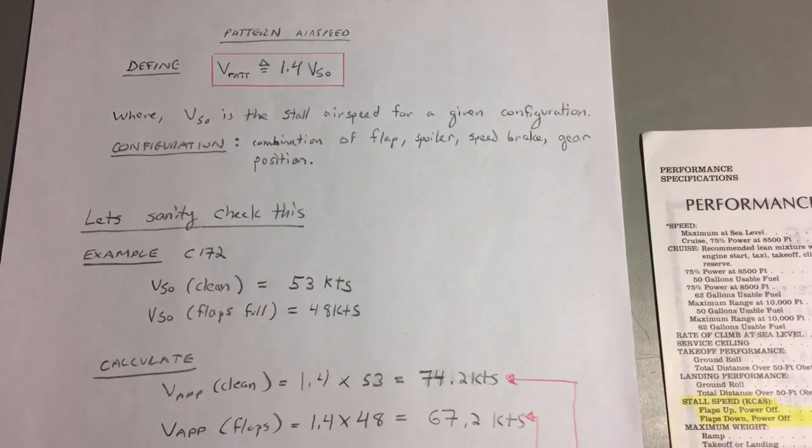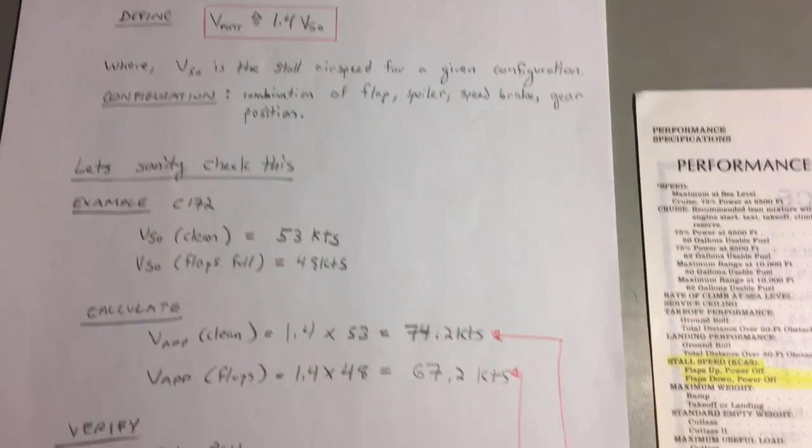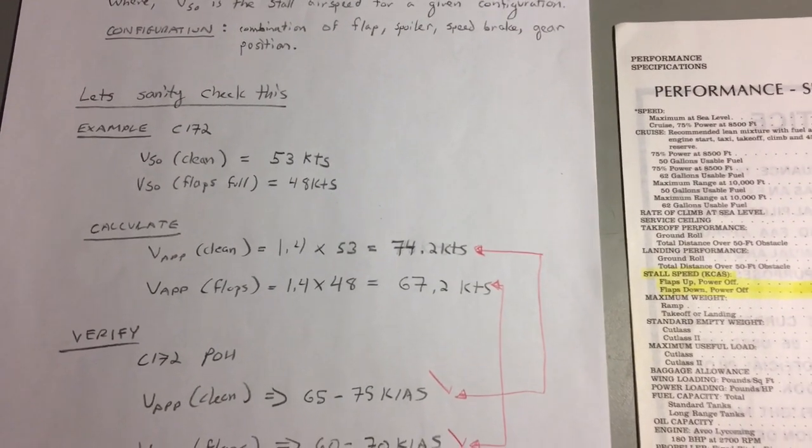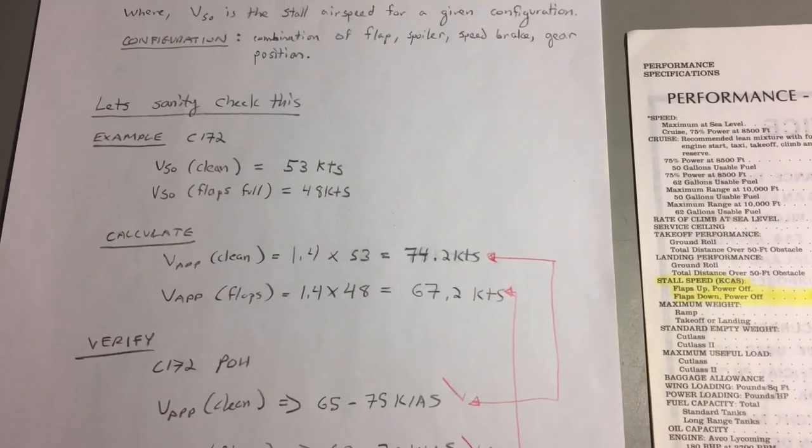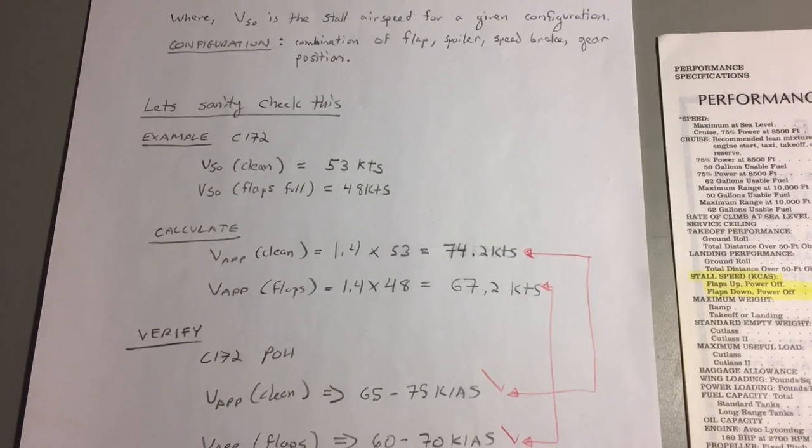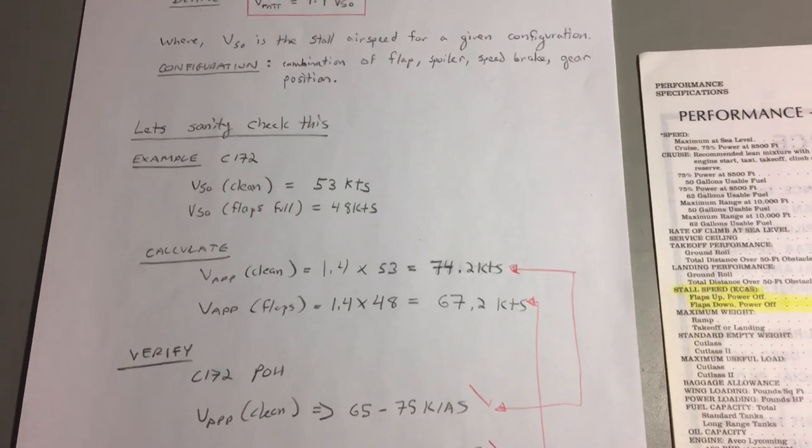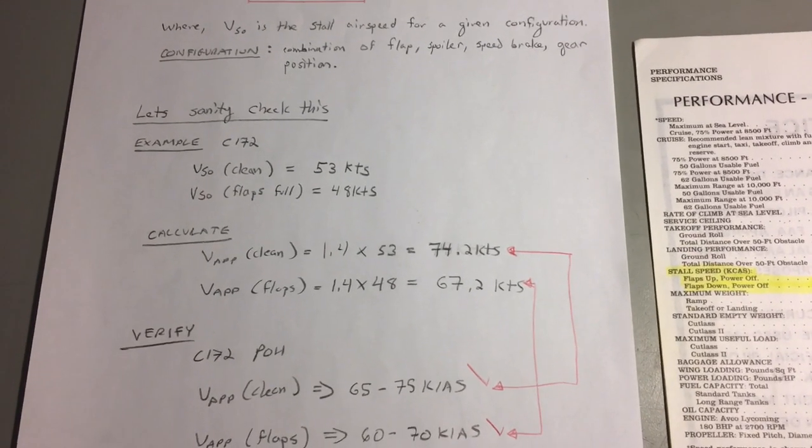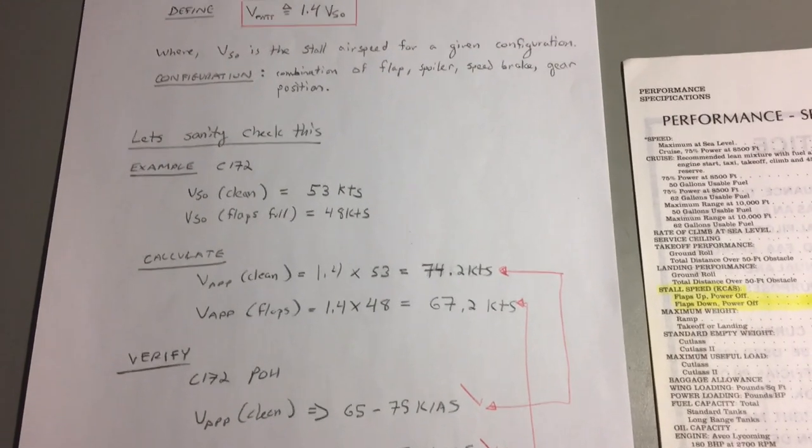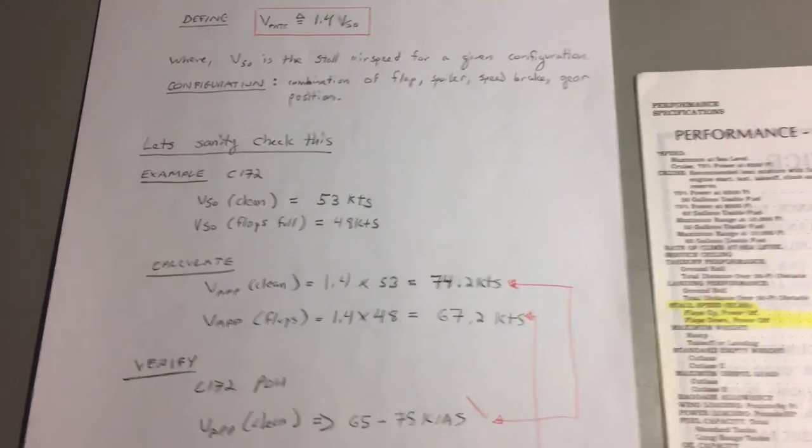Turning back to our equation we can see 53 knots for VSO clean and 48 knots for VSO dirty. If we multiply those two numbers respectively by 1.4 we'll see that 1.4 times 53 knots gives us an approach speed of 74.2 with the flaps up, and 1.4 times 48 knots gives us 67.2 knots for the approach speed with the flaps down.